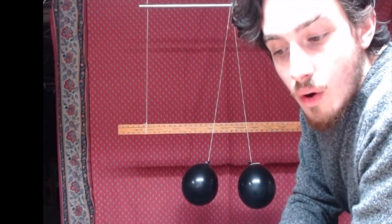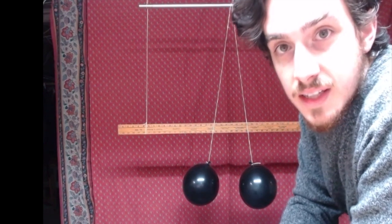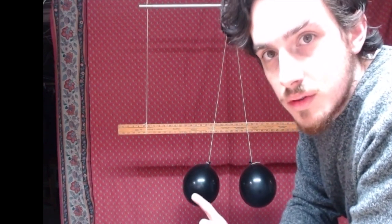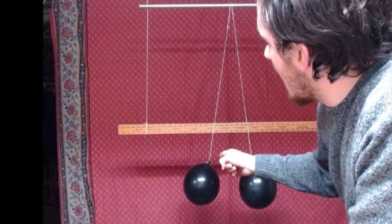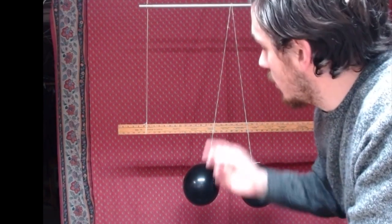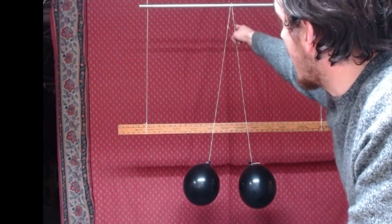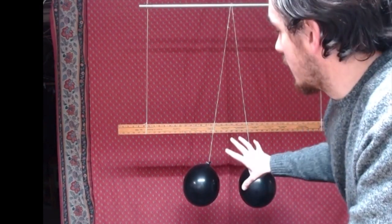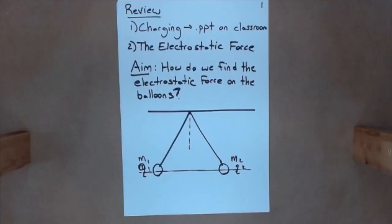Okay, so let's move into the actual lesson. And in the lesson, what we're going to do is we are going to determine what the actual electrostatic force on that balloon is, assuming that we know the mass of the balloon and the angle that it makes when it's interacting with the other balloon. Okay, lesson.